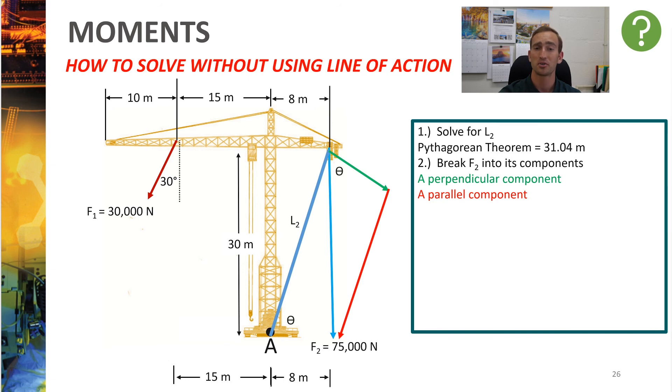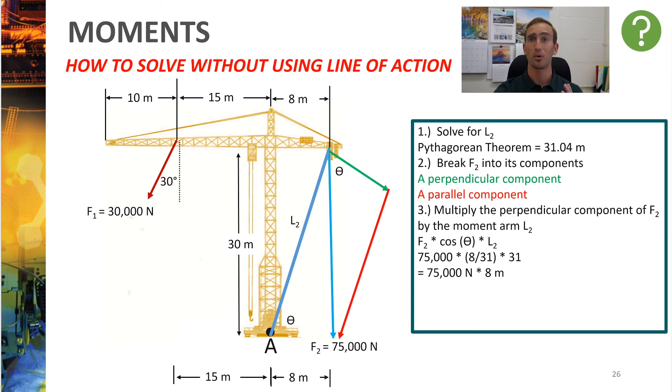Now what you'd have to do is you'd have to do some extra trig, you'd have to solve for this theta, and you'd have to compute the perpendicular component of the green moment arm of F2, which will be F2 times cosine theta times L2. When you plug in all of the numbers here, you'll find that you'll get 75,000 times 8 over 31 times 31, which at the end of the day is 75,000 times 8, which is exactly the same solution that we just got by using the line of action in the previous steps.